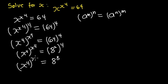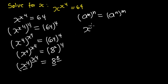Since we have the same base and the same exponent on both sides, we can see that x to the power 4 is equal to 8. From here, to get x we need to take the fourth root of both sides.